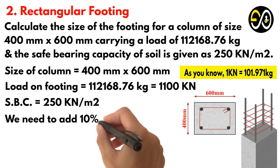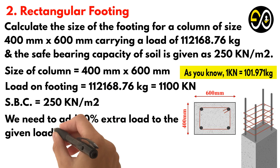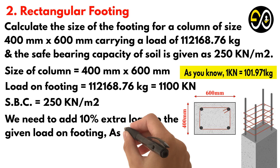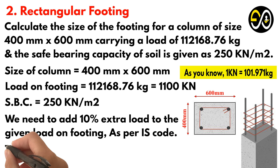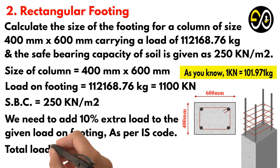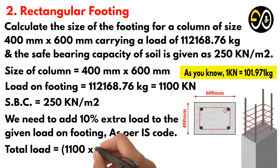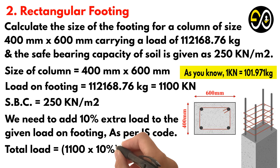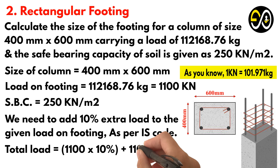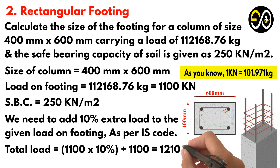We need to add 10% extra load to the given load on footing, as per IS code. Total load equals 1,100 times 10%, plus 1,100, equals 1,210 kN.